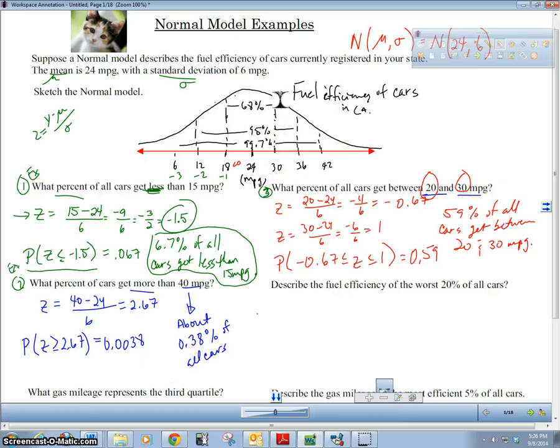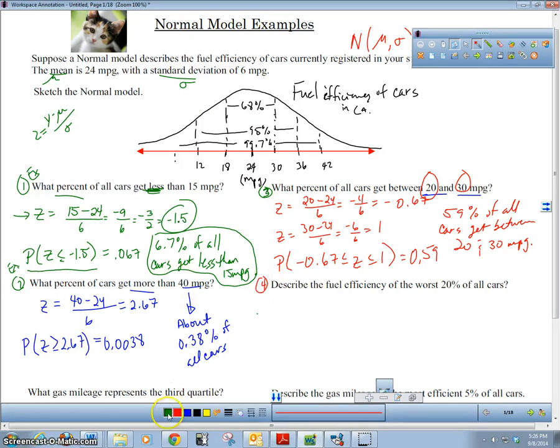Let's take a look at this fourth problem here. It's slightly different than the other ones. Number four: describe the fuel efficiency of the worst 20% of all cars. Now the other ones we did, they gave us the fuel efficiency. Now they give us the percentage of cars. The worst 20% are gonna be somewhere down here. This right here, that is gonna be 20%. We want the bottom 20% of all cars.